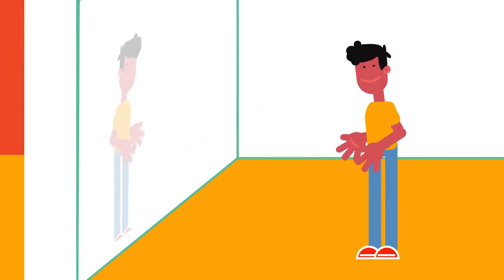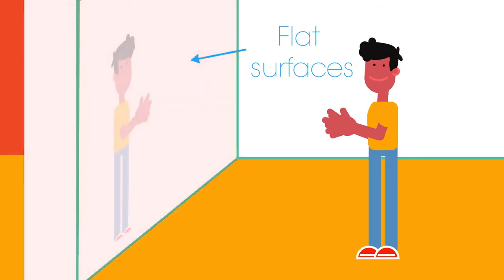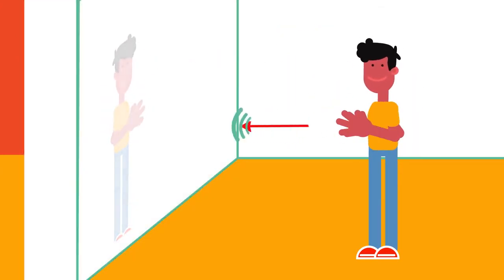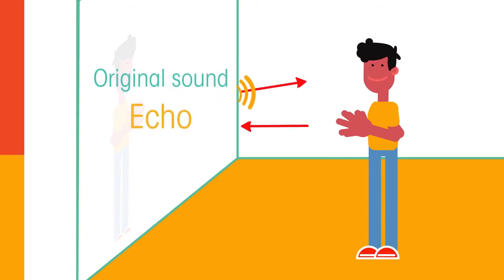Sound waves are reflected by hard, flat surfaces, which is why we get echoes. You hear a delay between the original sound and the echo because the echoed sound waves have to travel twice as far to reach your ears.